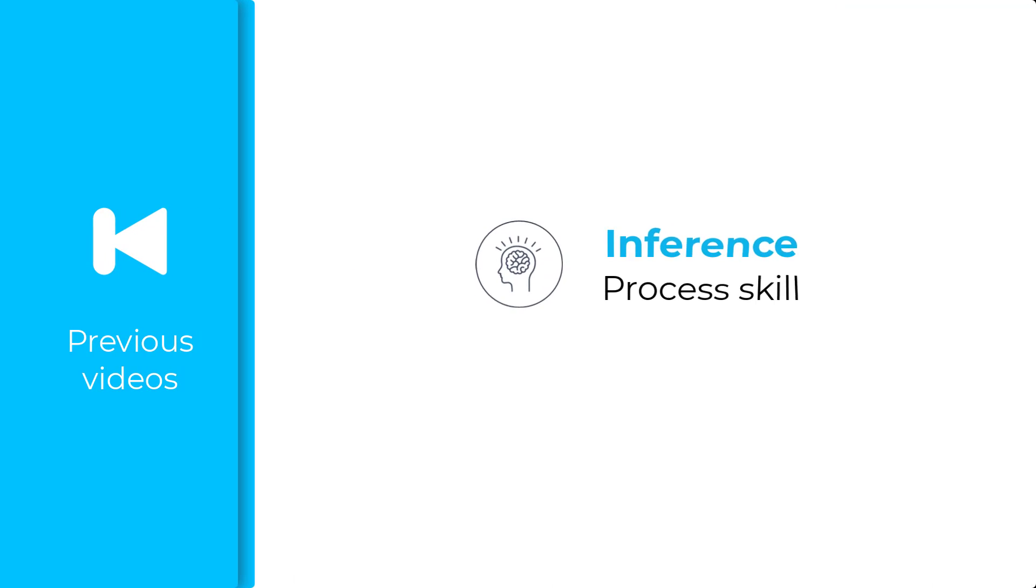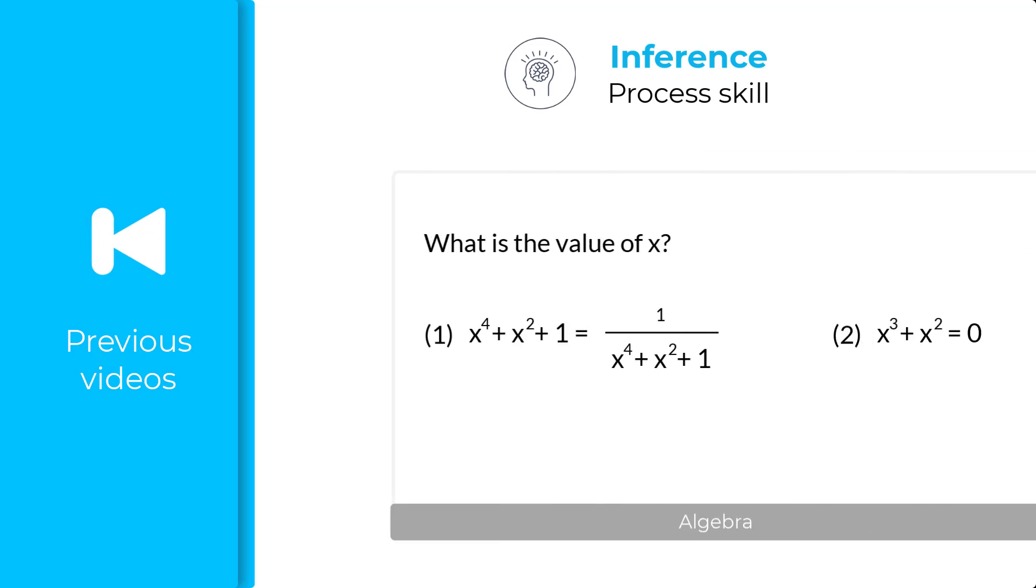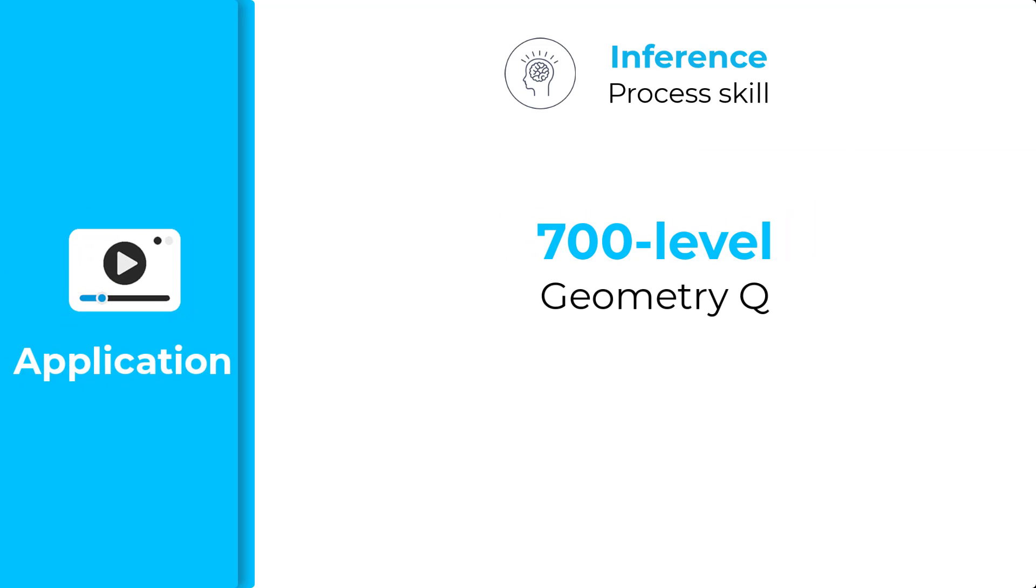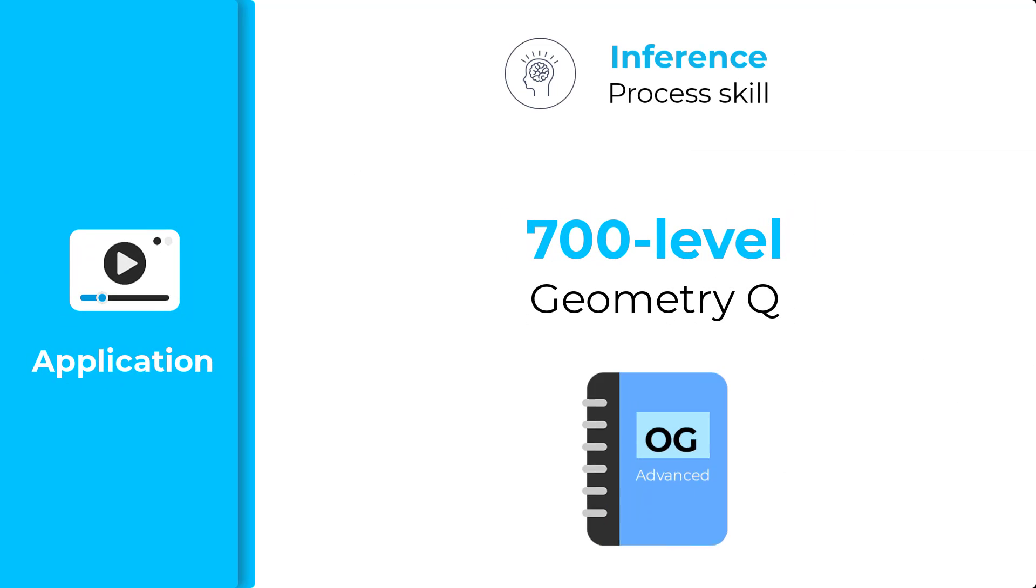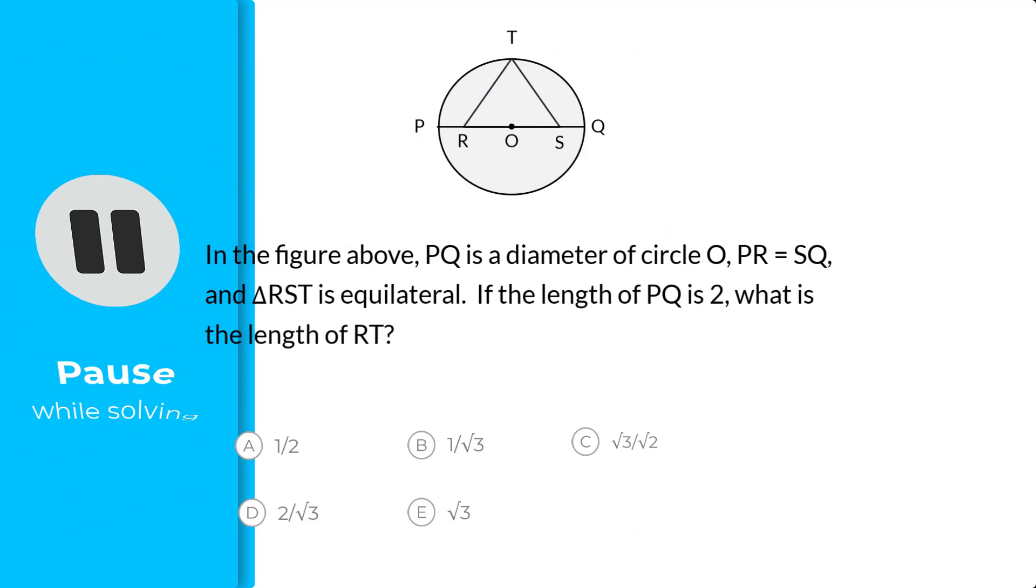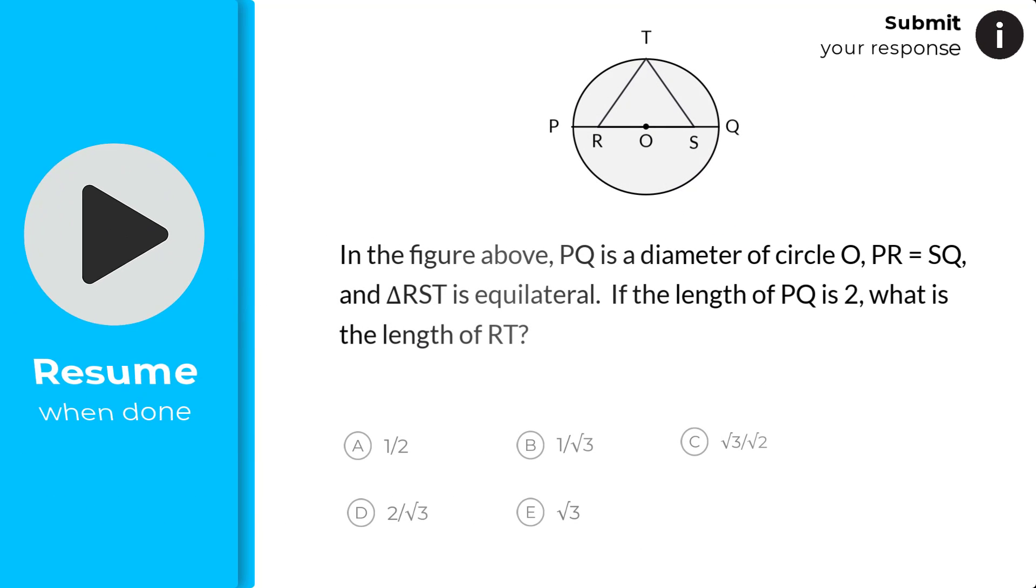After applying inference skills on number properties and algebra questions, now apply them on 700-level geometric question from OG Advanced Book. Pause the video while you're solving and resume when you're done.